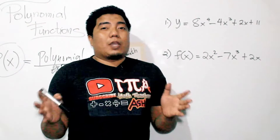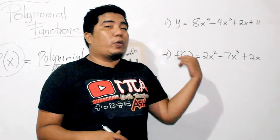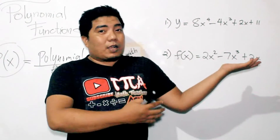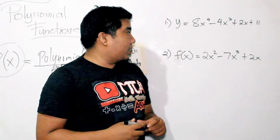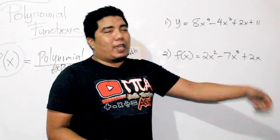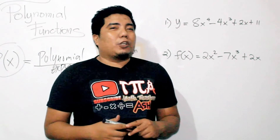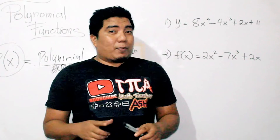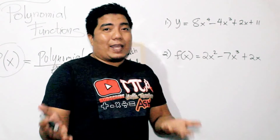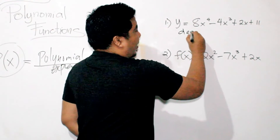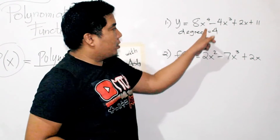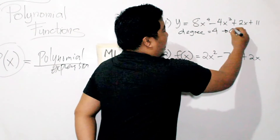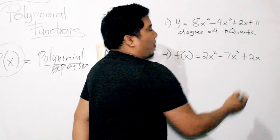Let us consider some examples. We have here two polynomial functions, because each has a y and an x variable — a function of x and the x variable. For the first example, the highest degree is 4, because that is the highest exponent. So if the degree is 4, then this is known as a quartic polynomial function.